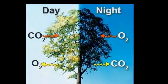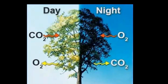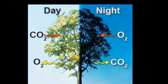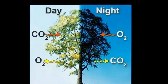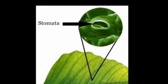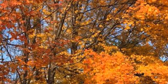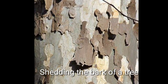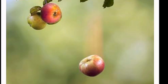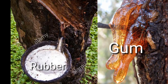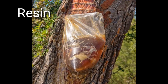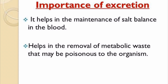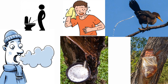Plants also excrete. The waste products of plants are generally carbon dioxide, water vapor, and oxygen. Carbon dioxide and water vapor are waste products of respiration, and oxygen is the waste product of photosynthesis. These are released through stomata. Some waste products are stored in leaves, bark, and fruits, and trees get rid of them when dead leaves, barks, or ripe fruits fall off. They also secrete waste products such as gum and resins. If waste products are not removed, our cells will stop working and we will fall sick. Non-leaving things do not excrete.